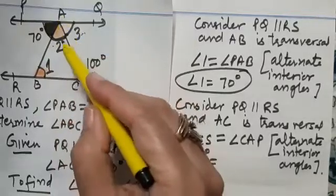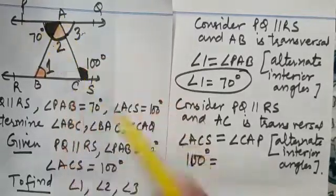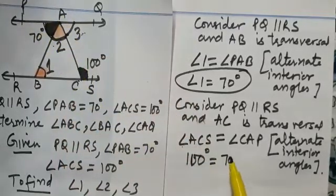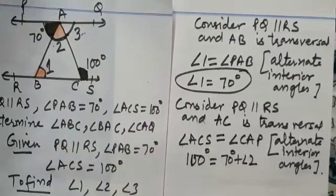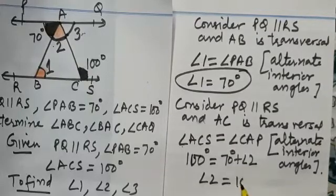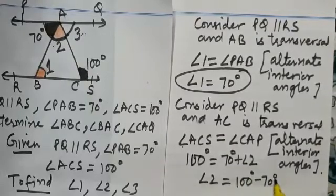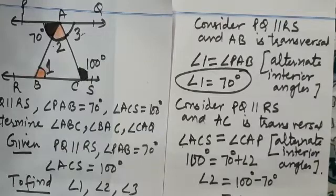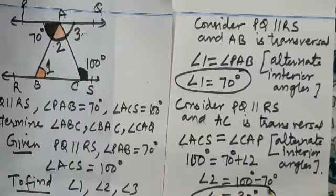Observe angle CAP. It is made up of two parts now. So this is equal to 70 degrees plus angle 2. Can you find angle 2 from here? Yes, of course. So what will be angle 2? 100 degrees minus 70 degrees. So that gives us 30 degrees. So we have found angle 2.